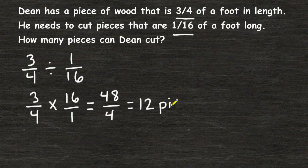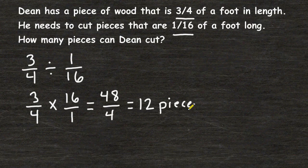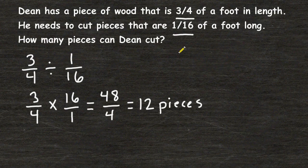So if we were to cut a piece of wood that was 3 quarters of a foot in length, we could get 12 pieces that were the size of 1 16th of a foot long.